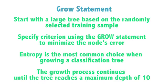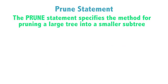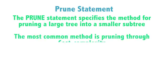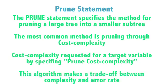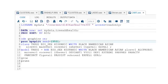The solution is to find a smaller subtree that results in a low error rate on both the training and validation samples. To do this, you use the PRUNE statement to specify the method you'd like to use for pruning. The most common and recommended method is pruning through cost complexity, which can be requested for either a categorical or quantitative target variable by specifying PRUNE costcomplexity. This algorithm is based on making trade-offs between the complexity — i.e., size of the tree — and the error rate to help prevent overfitting. Thus, large trees with a low error rate are penalized in favor of smaller trees. After specifying my GROW and PRUNE choices, I end my program with a RUN statement.